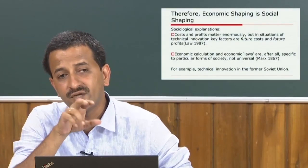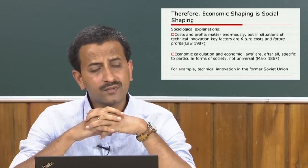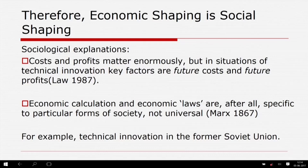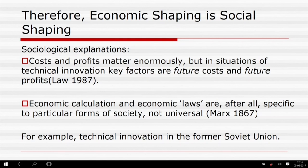As MacKenzie and Wajcman's book argues, furthermore, even if we restrict our attention to societies in which prices reflect market competition, we find that economic calculation remains a mechanism of social shaping — because it is specific to particular forms of society and modes of production. Economic calculation presupposes a structure of costs used as its foundation. But a cost is not an isolated arbitrary number of pounds or dollars — it can be affected by, and itself affect, the entire way society is organized. This point emerges most sharply when we consider the cost of labor.